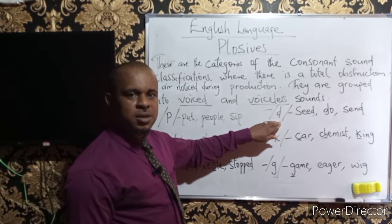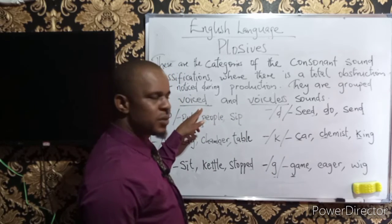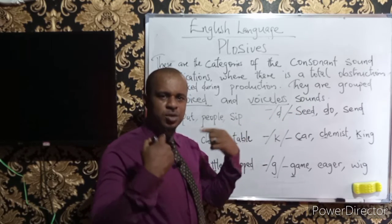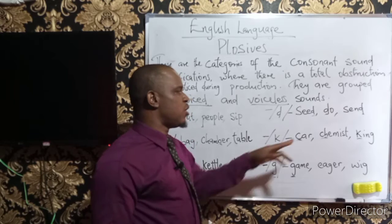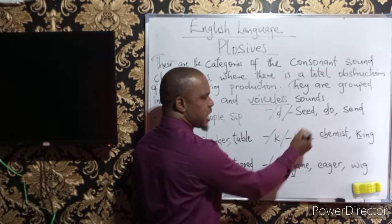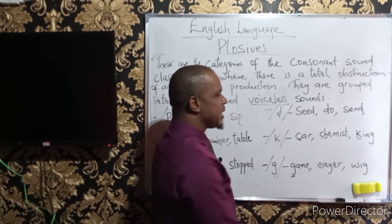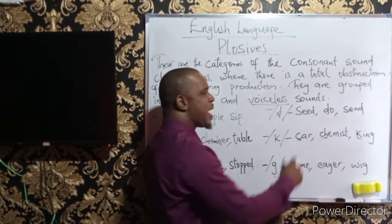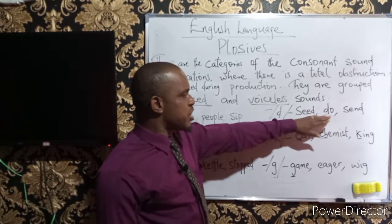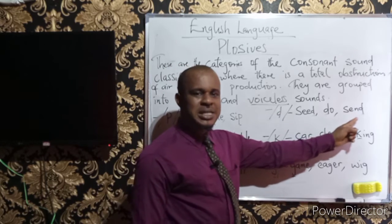The next one is /d/. This one belongs to the category of the voiced sound, because when we produce it you observe the vibration in your vocal cord. Examples include 'sit', 'do', and 'send' — these are three words that contain the sound /d/.